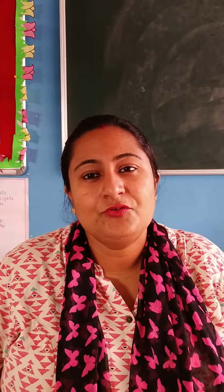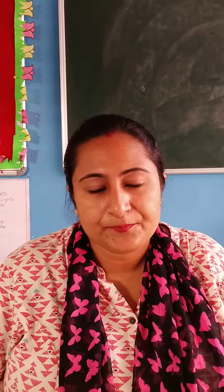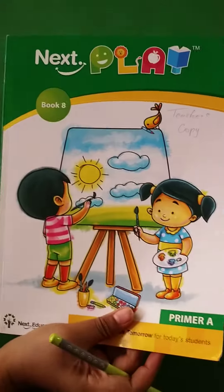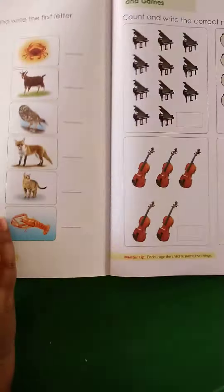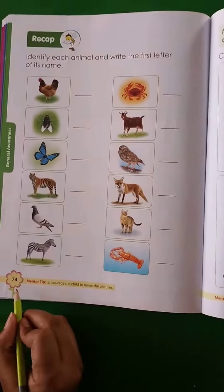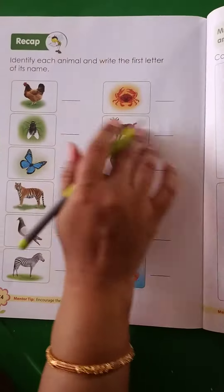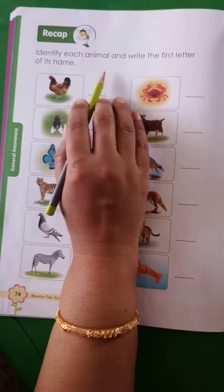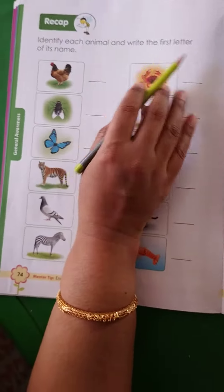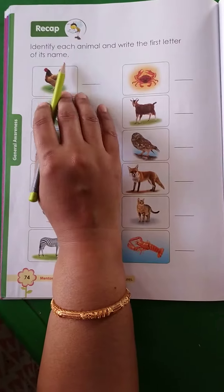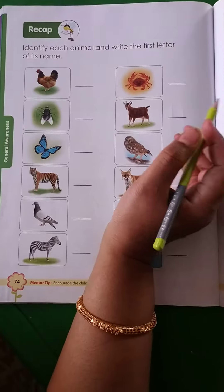Good morning children, we are going to do the revision of G.K. Take a look at number 8 and open page number 74. Identify each animal and write the first letter of its name.